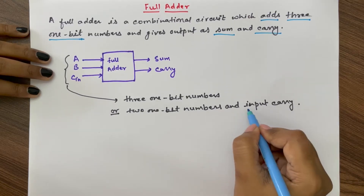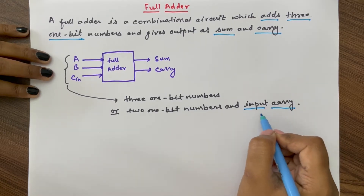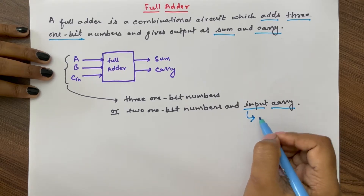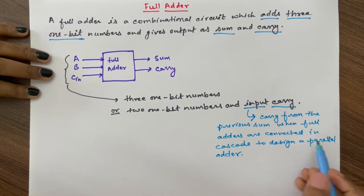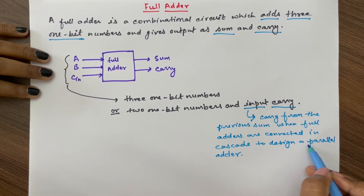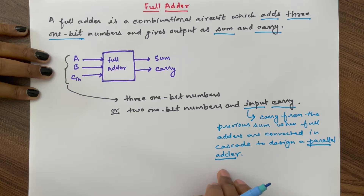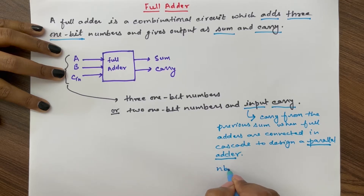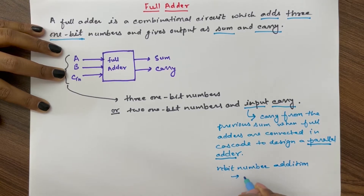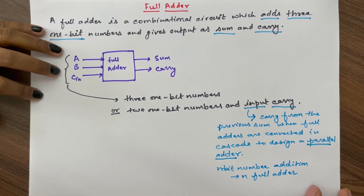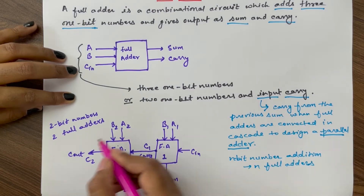This input carry is the carry from the previous sum. This carry comes from a previous sum when full adders are connected in cascade to design a parallel adder. This parallel adder is used for n-bit number addition, and for n-bit number addition we need n full adders connected in cascade.